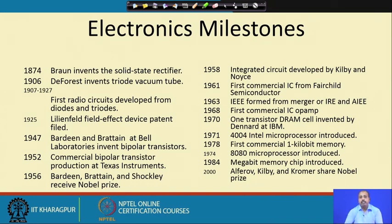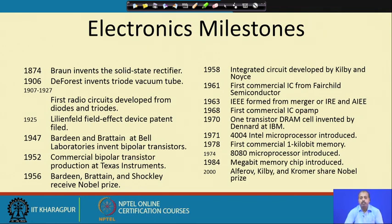The IC was developed in 1958 by Kilby and Noyce, and then the first commercial IC came from Fairchild Semiconductor in 1961. As this industry was advancing, scientists also started doing lots of research. There was an institution of engineers — IEEE — which was formed by a merger of IRE and AIEE. IEEE is one of the very popular societies now, and they make a lot of standards for new devices and systems.